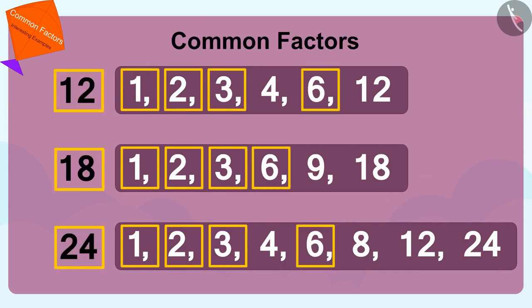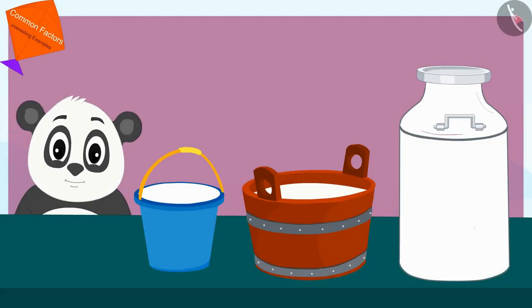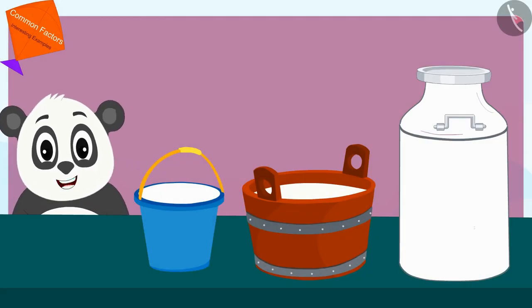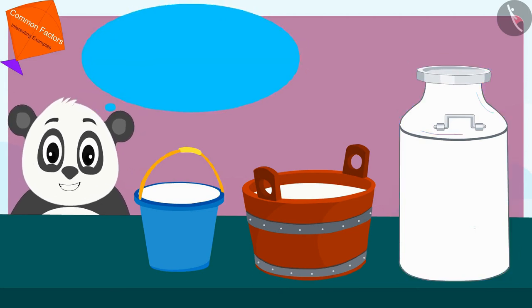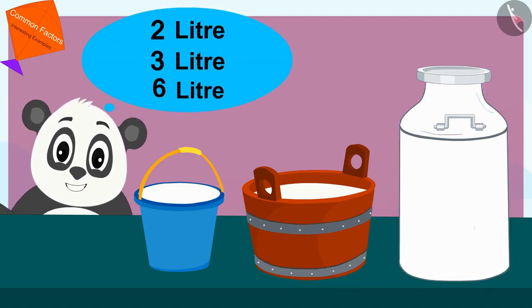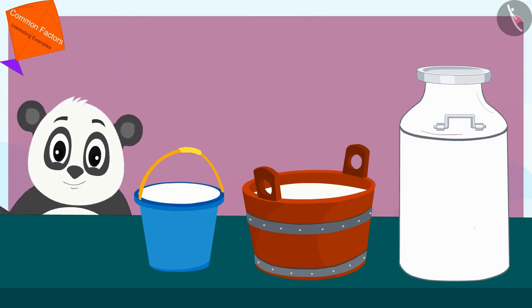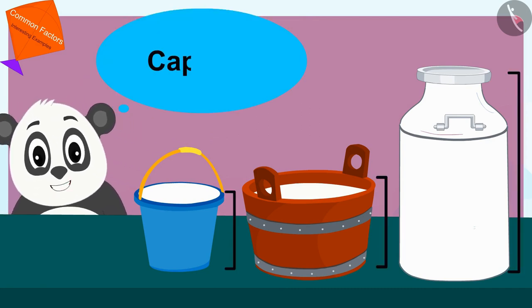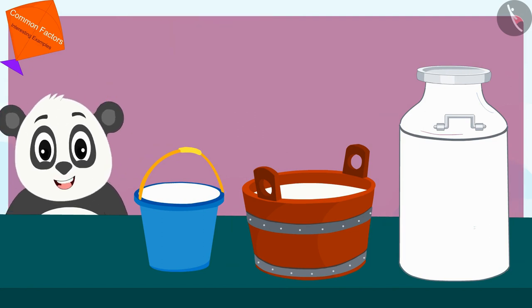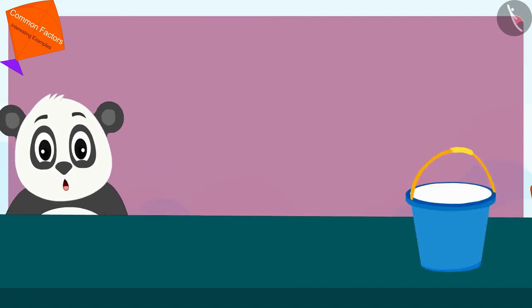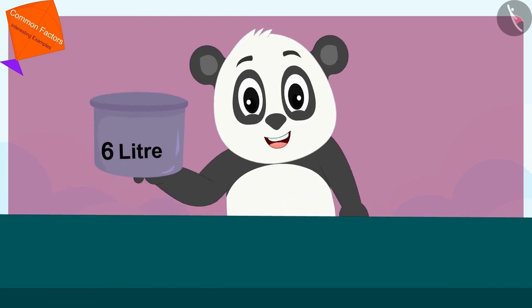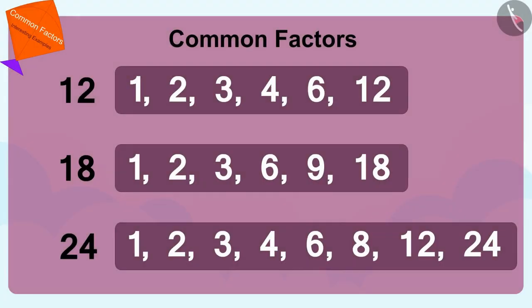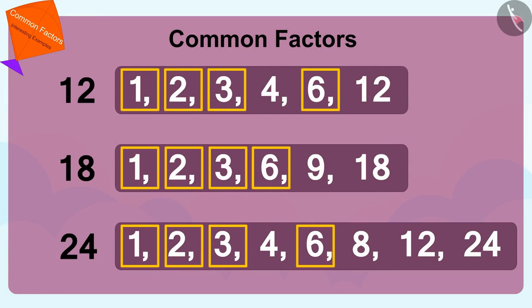We need to find the common factors of 12, 18, and 24. 1, 2, 3, and 6 are the common factors of these numbers. Golu can easily measure the milk filled in these pots using a pot of 2, 3, or 6 liters. The largest of these is a capacity of 6 liters.